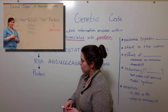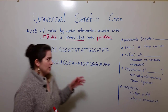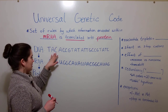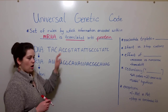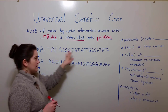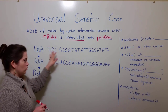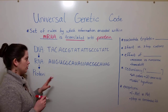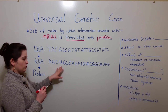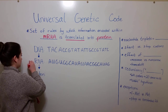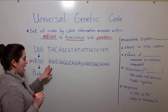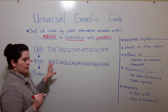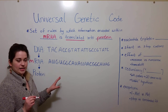Here we have a DNA sequence made of the nucleotides thymine, adenine, cytosine, and guanine. This is the template strand — the strand of DNA that is going to be used in transcription to make this strand of mRNA, done by complementary base pairing between nucleotides.